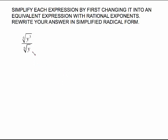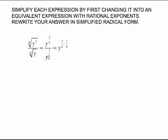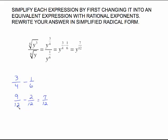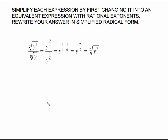New exponent law, same directions. Write each in rational exponent form: y to the three-fourths divided by y to the one-sixth. This exponent law says keep the base and subtract. Common denominator is twelfths: three-fourths multiplied top and bottom by three gives nine-twelfths; one-sixth multiplied top and bottom by two gives two-twelfths. Subtract to get seven-twelfths. Go back to radical form — the index is bigger than the inside power, so you're finished with the twelfth root of y to the seventh.